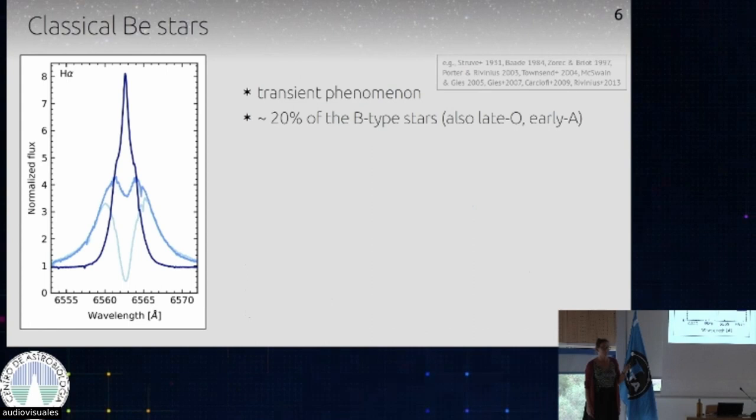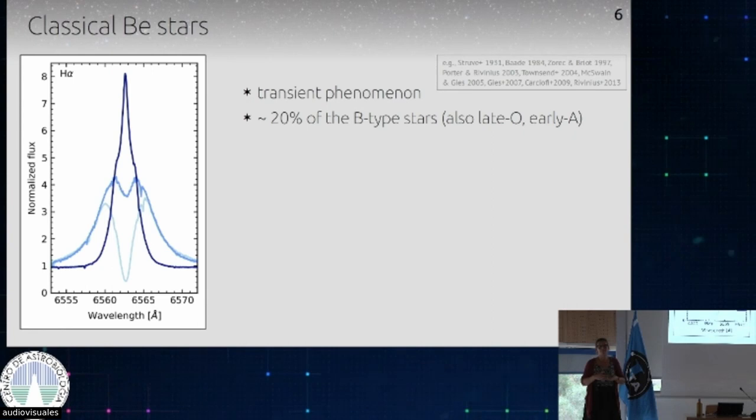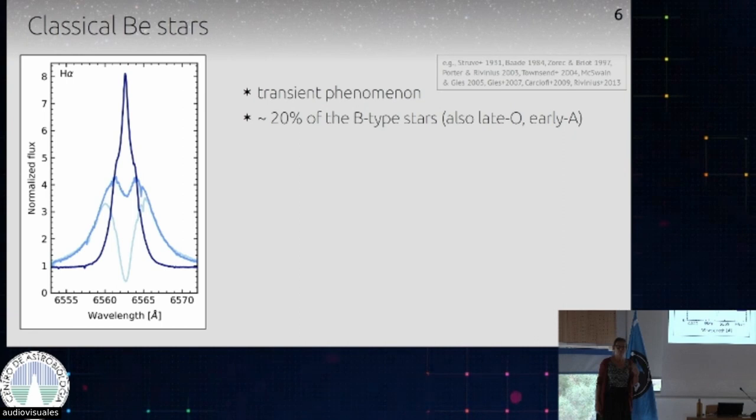Observations have shown that the phenomenon behind these stars is transient. So if you look at a star, you might see emission lines. If you look back 10, 15, or 20 years later, the emission is gone. If you look back a year later, it might be back. If you count these stars in the galaxy, you find that 20% of them show this phenomenon at some time — so it's actually quite common for massive stars.